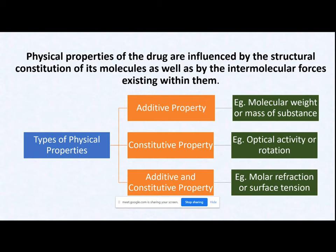Second, you have constitutive property. Constitutive property of a substance is dependent on the arrangement of atoms or bonds in the structure. Individual atom contributions are not considered separately — rather, the overall arrangement of atoms and which bonds are present will determine these properties. For example, optical activity or optical rotation is your constitutive property.